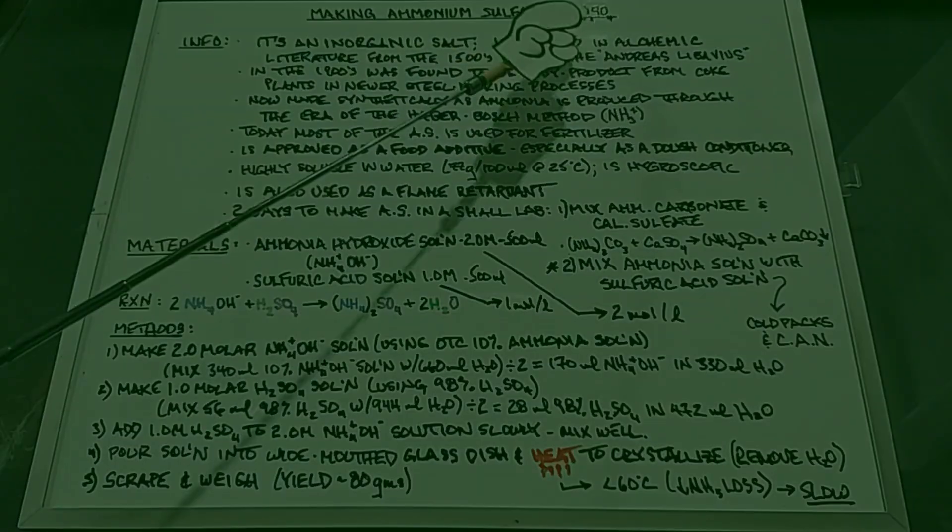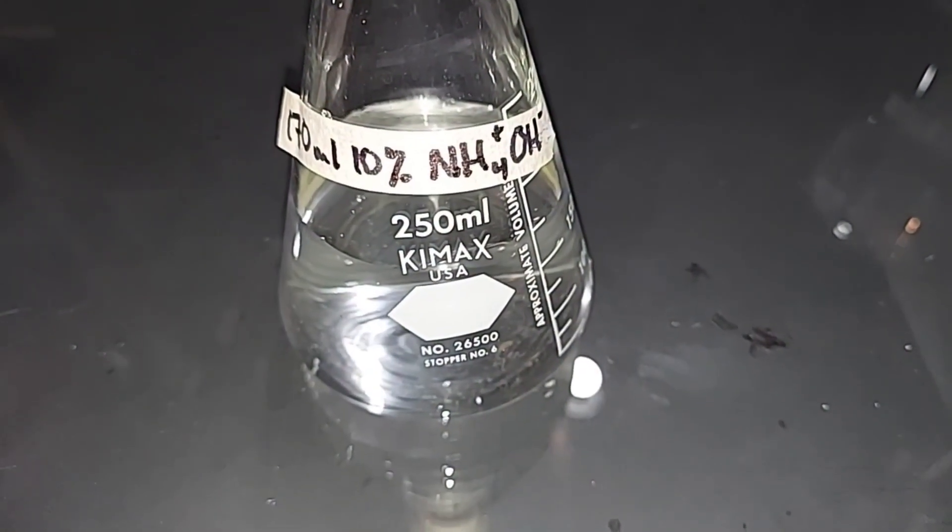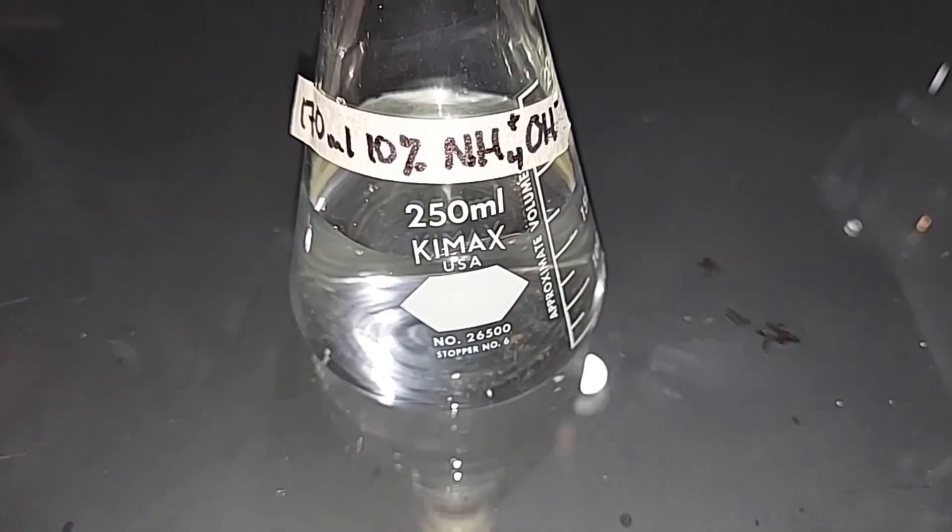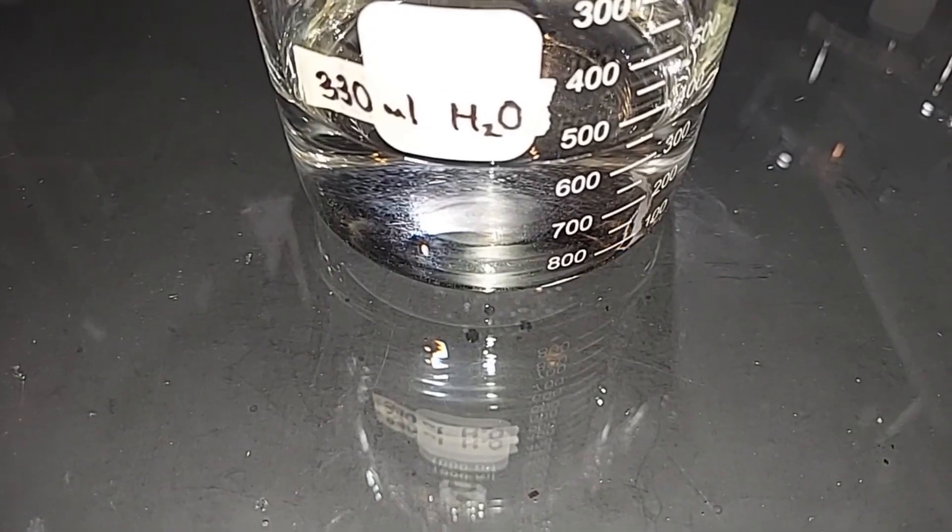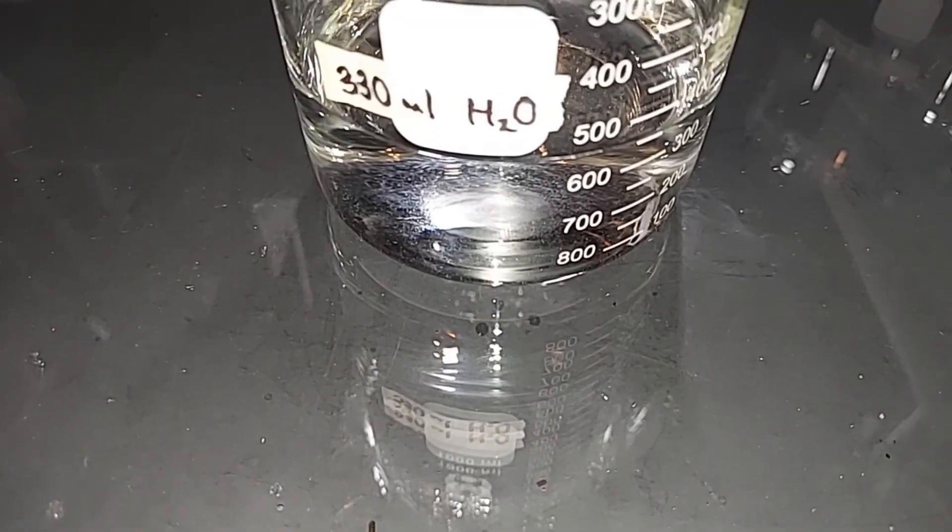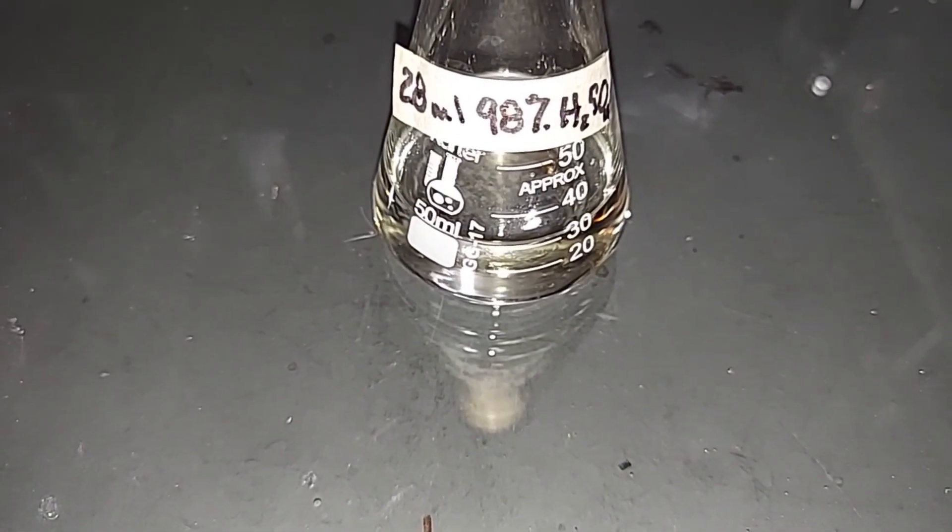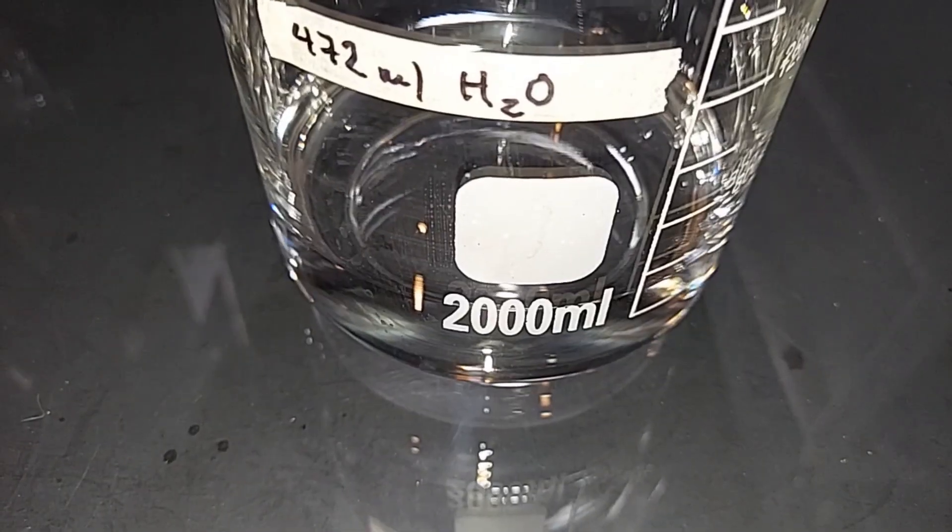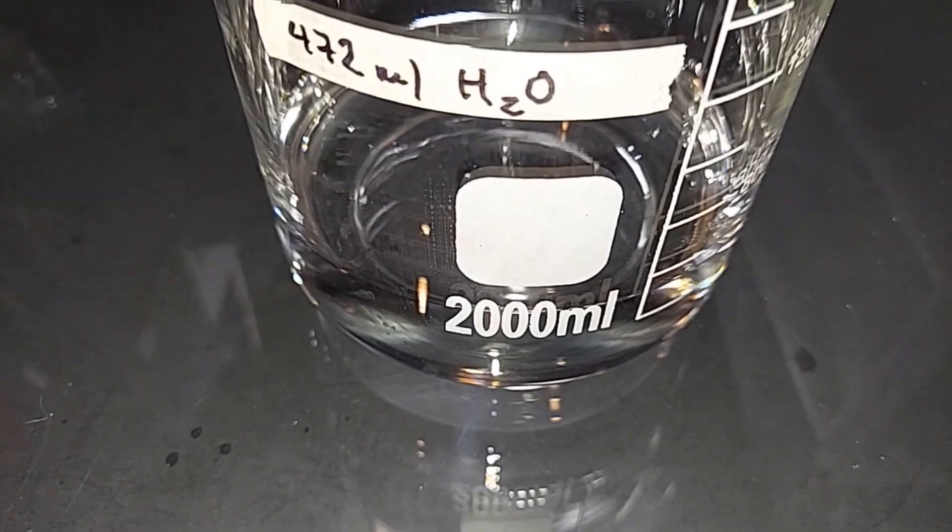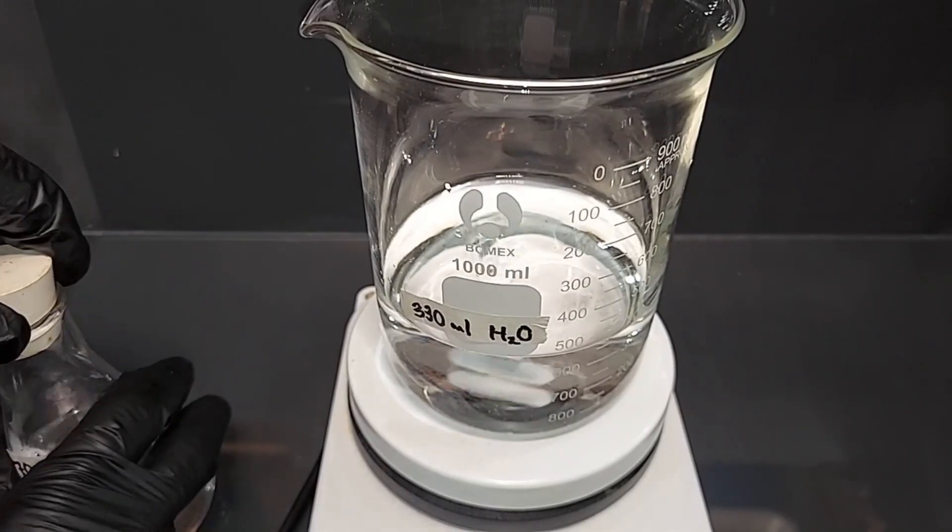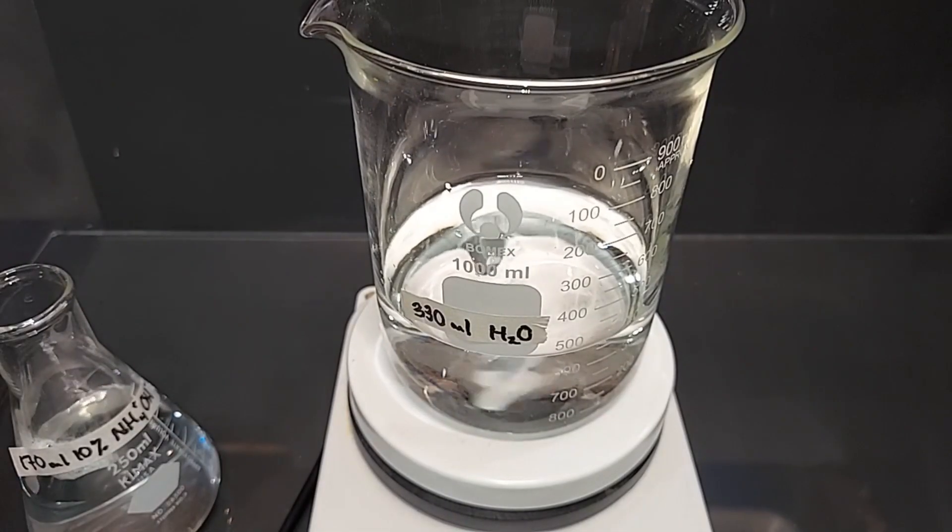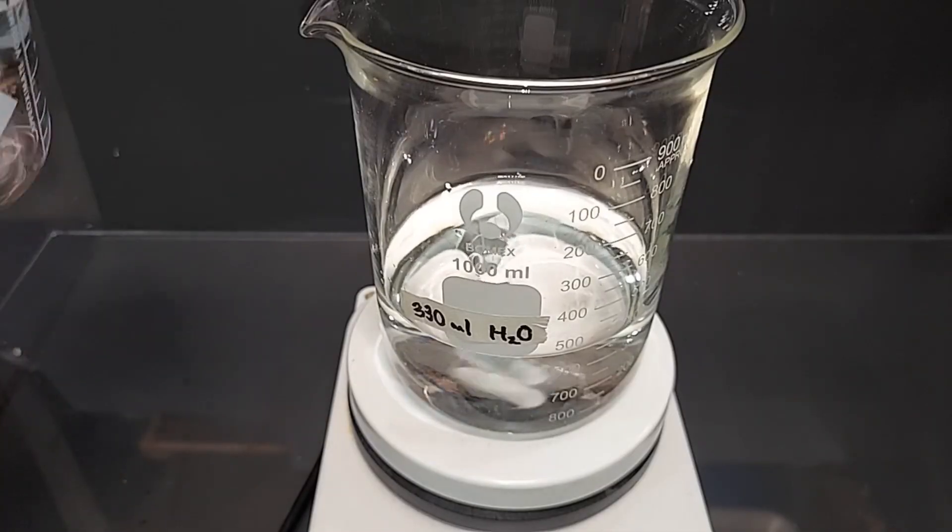170 milliliters of a 10% ammonia hydroxide solution pre-measured to be mixed with the 330 milliliters of water pre-measured. 28 milliliters of a 98% sulfuric acid solution pre-measured to be mixed with 472 milliliters of water pre-measured. Here's the 330 milliliters of water. I'm going to turn on the magnetic stirrer and start to add our ammonia solution here. This will make our two molar per liter solution.